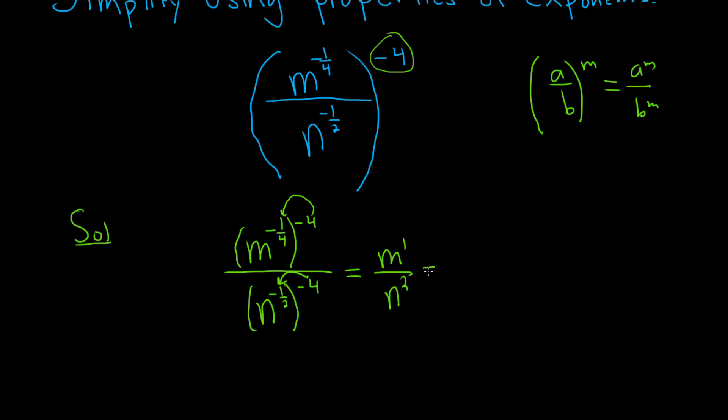And the last thing to do is just realize that m to the first power is just m. So it's really just m over n squared. And that would be the final answer. I hope this video has been helpful.